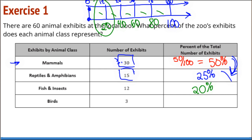The double number line totally works on these problems. For the birds — 3 exhibits — I can use the same double number line. I count from 0 to 12 by 3s: 3, 6, 9, 12. The 20% gets divided into 4 parts — 20 divided by 4 equals 5 — each part is worth 5. So 3 exhibits is worth 5%.